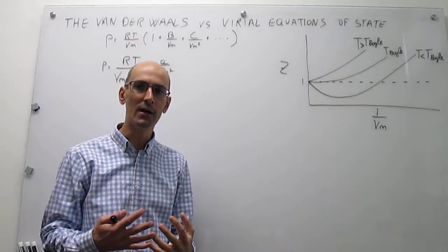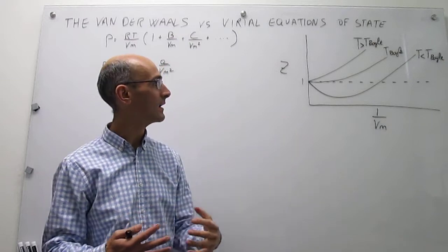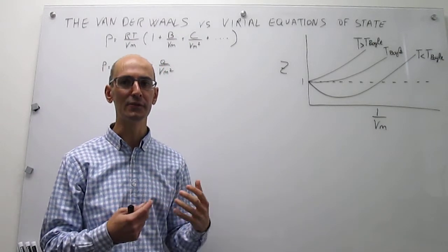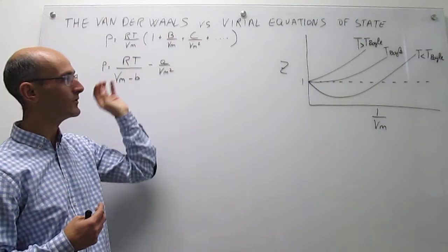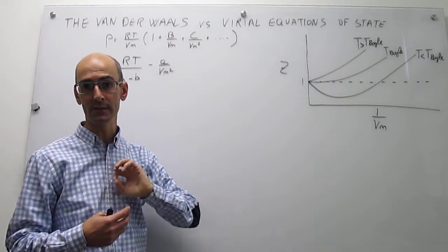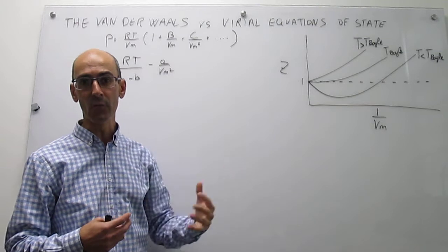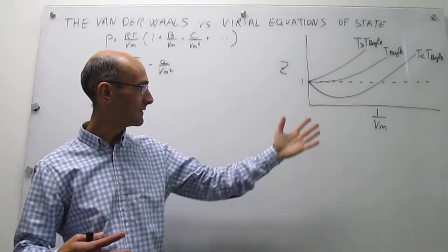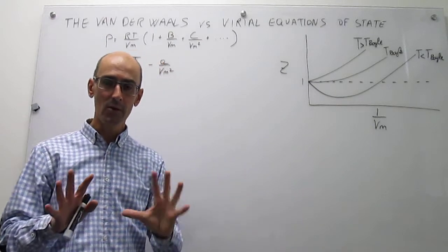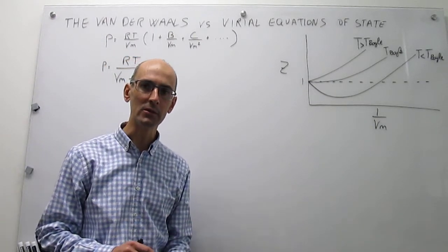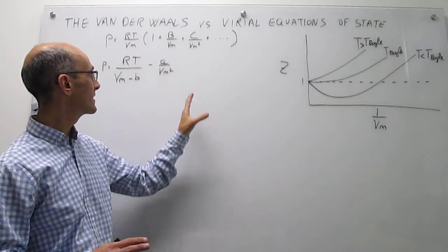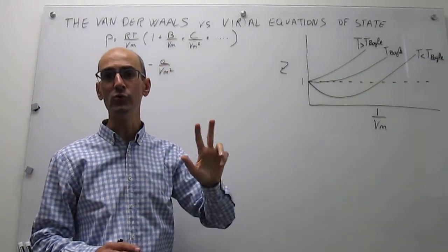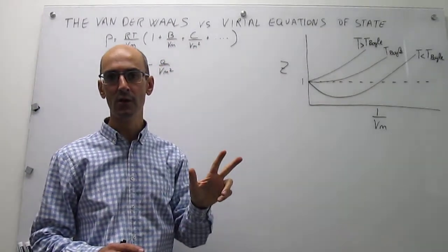Our question is whether this behavior can be understood in terms of the parameters introduced in the Virial and van der Waals Equations of State, which are supposed to capture reality. To keep things simple, we are going to cut the Virial expansion to just two terms.